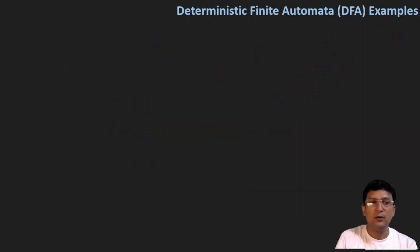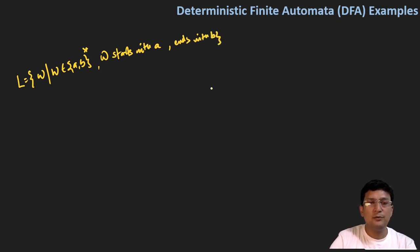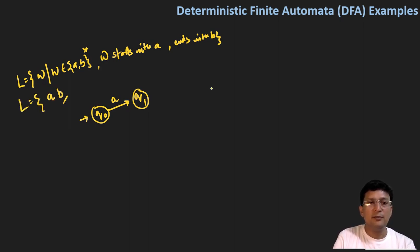Let's extend it further. Let's say there is a language: W where W is an element of {A,B}*, and W starts with A and ends with B. The smallest string accepted will be 'AB' because it starts with A and ends with B. Another acceptable string is 'AAB', which starts with A and ends with B. Another one can be 'ABB', and also 'AABB'. So this will be an infinite language.